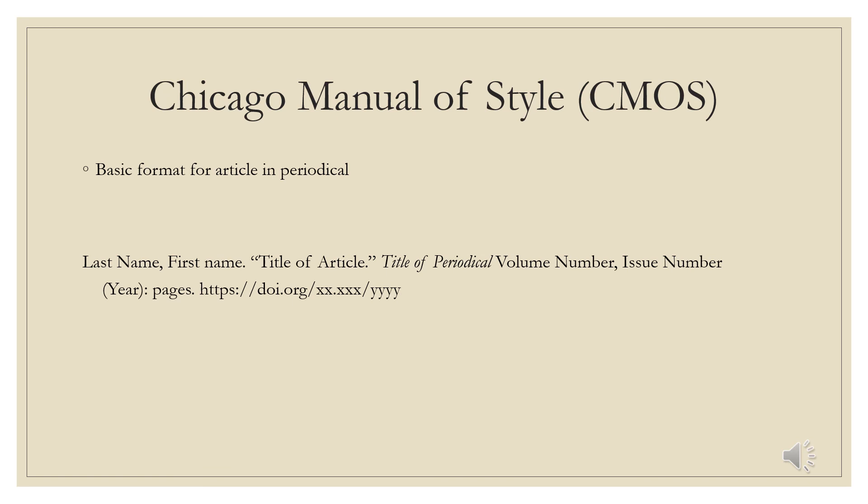Chicago Manual of Style. Chicago is quite different from the previous two citation styles. There are two different styles of Chicago, and today we are referencing the bibliographic style. The author's whole name is first, the title of the article in quotation marks and capitalized, along with the title of the periodical which will be in italics. There are some other details: volume number, issue number, pages, and then the DOI or URL if applicable. The style also uses a hanging indent but will not be double spaced like the previous two.